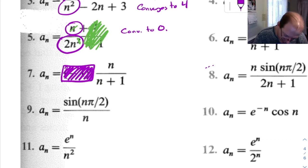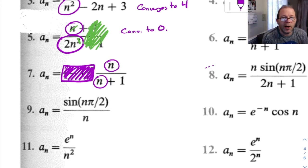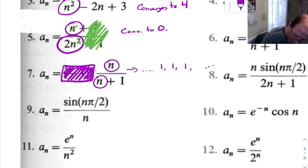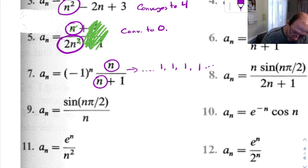So our dominant term on what's left here is n and n on the bottom as well. So if we're ignoring that negative 1, this thing is going to go to 1. And so that means that our terms eventually will be 1, 1, 1, 1, and so on.